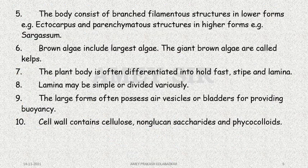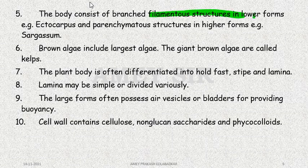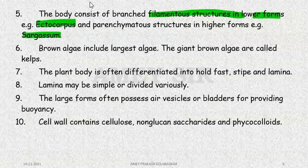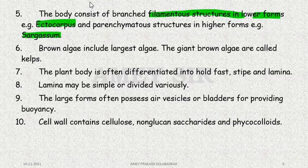Moving ahead in the general characters: filamentous structures are found in lower forms, such as Ectocarpus, whose life cycle we will be studying. In higher forms, we get structures like Sargassum, as I just explained.